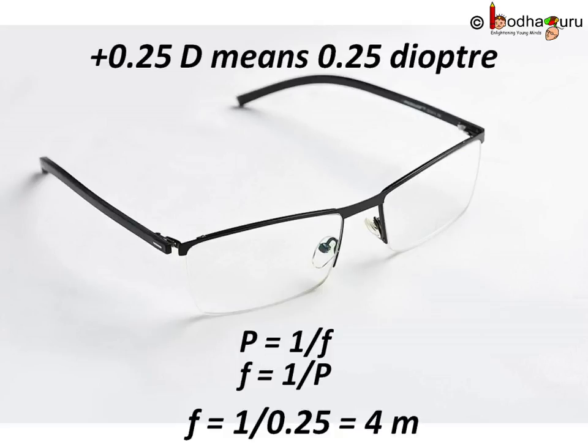And when the power is negative, means focal distance would be negative, means a concave lens. Bye-bye.